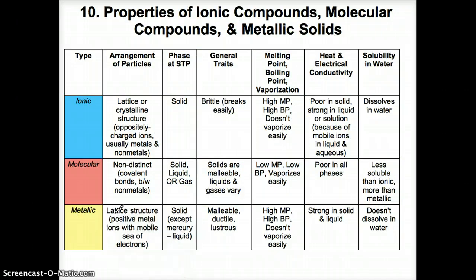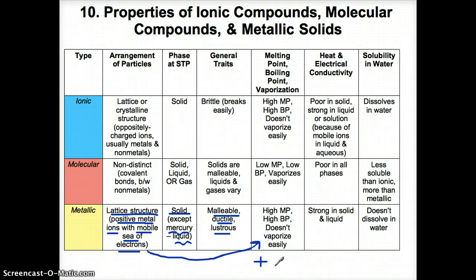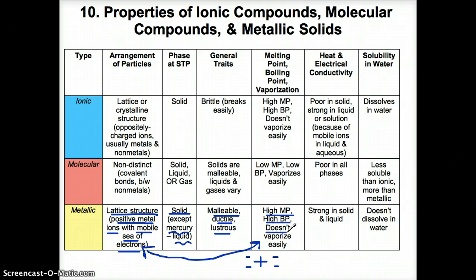Finally, we have metallic substances. Metallic substances have lattice structures, and metallic bonds consist of positive metal ion nuclei surrounded by a mobile sea of electrons. Metals are all solids except for mercury, which is a liquid at STP. Metals are malleable, ductile, and lustrous. Because there is a very strong attraction between the full positive charges from the metal ions and the full negative charges from the surrounding electrons, metallic substances tend to have high melting points, high boiling points, and they don't vaporize easily.